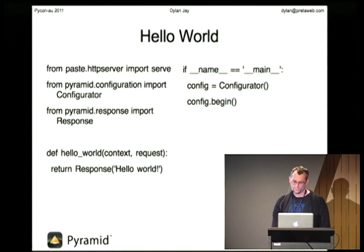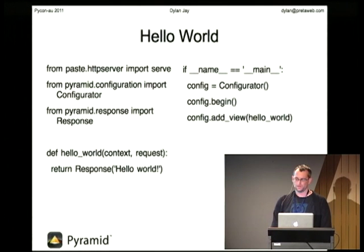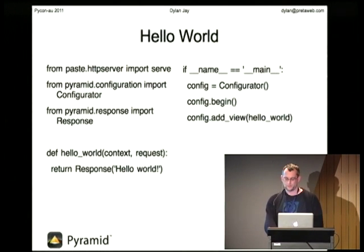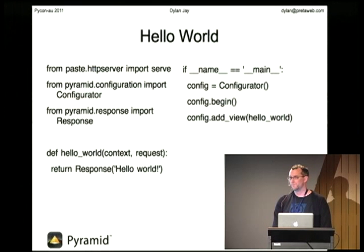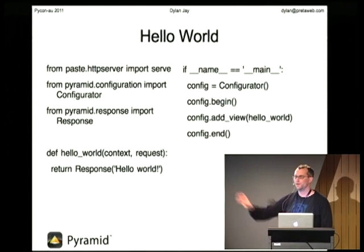We need a little bit of configuration to wire that up. We can put this in the same module. You create a Configurator, then add view definitions. There are actually three ways to do view configuration in Pyramid — I'm just going to talk about the imperative declaration to make things easier. But we do have decorators in Pyramid that are quite nice. So we add a view, which is our hello world function, and with no parameters it's just going to appear as /hello_world.